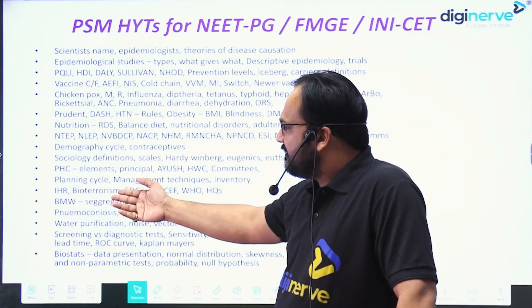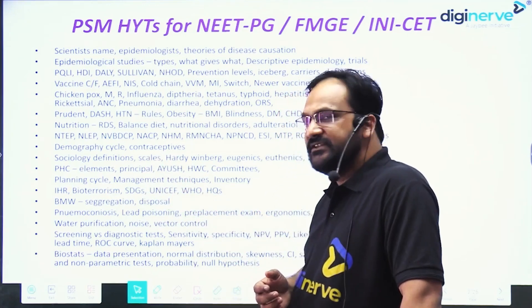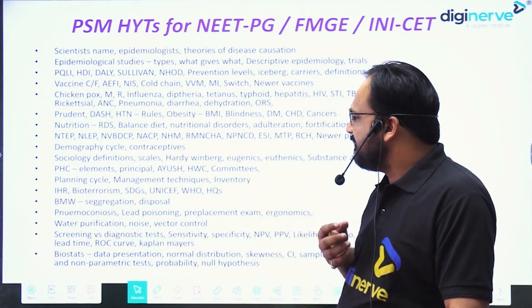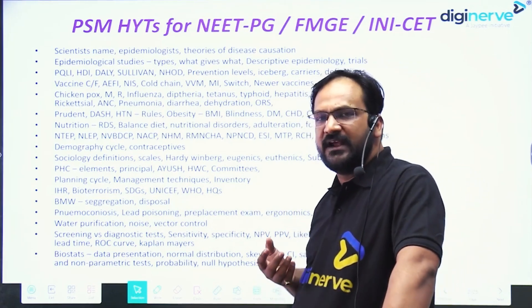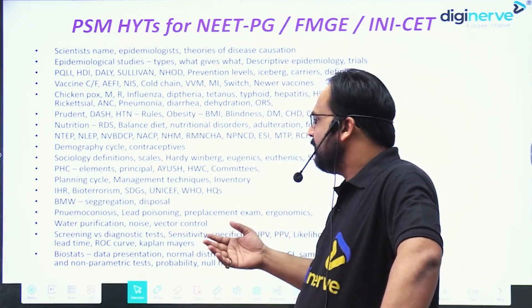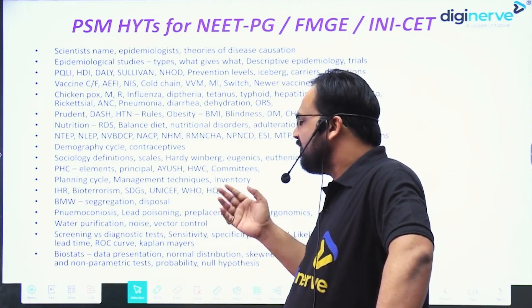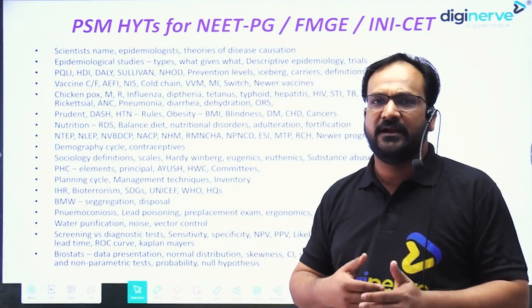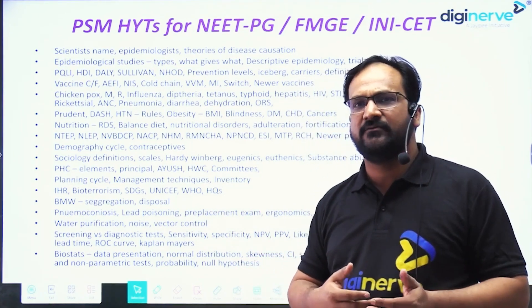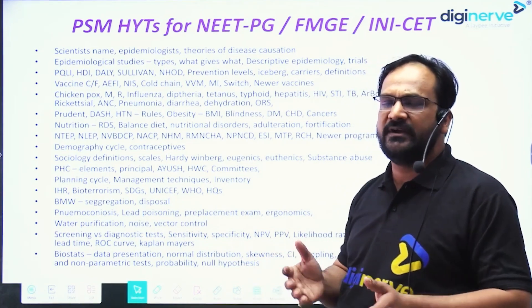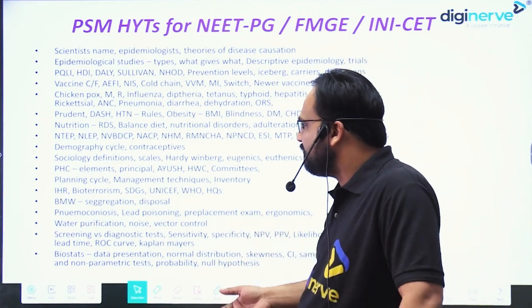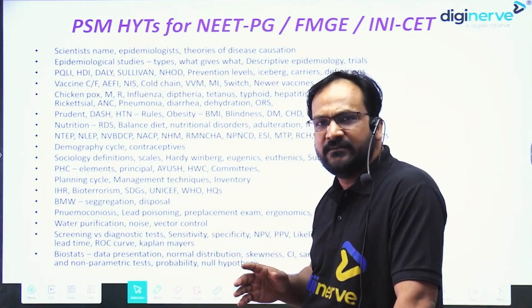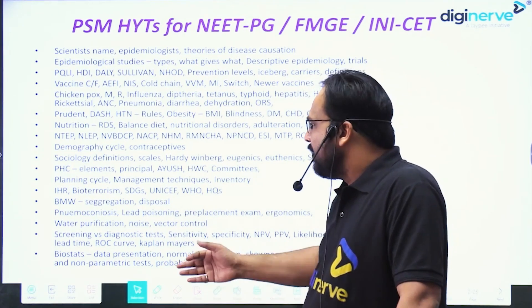They ask questions from international health regulations for disease and bioterrorism. They ask from sustainable development goals — specifically the health goal of the SDGs, from UNICEF and WHO. You must know the headquarters of various agencies: where is the WHO headquarter, where is the UNICEF, UNESCO, UNDP, and UNFPA headquarter. From biomedical waste management, they ask about segregation and disposal.